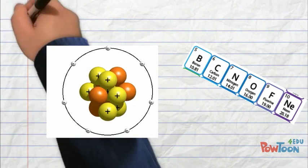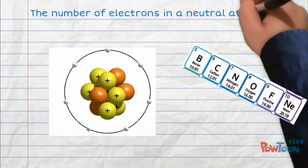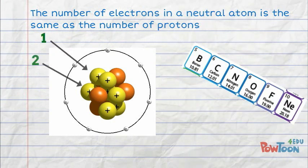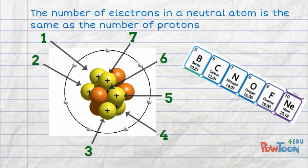The number of electrons in a neutral atom is the same as the number of protons. So for example, nitrogen has 1, 2, 3, 4, 5, 6, 7 protons. That means it has 1, 2, 3, 4, 5, 6, 7 electrons.